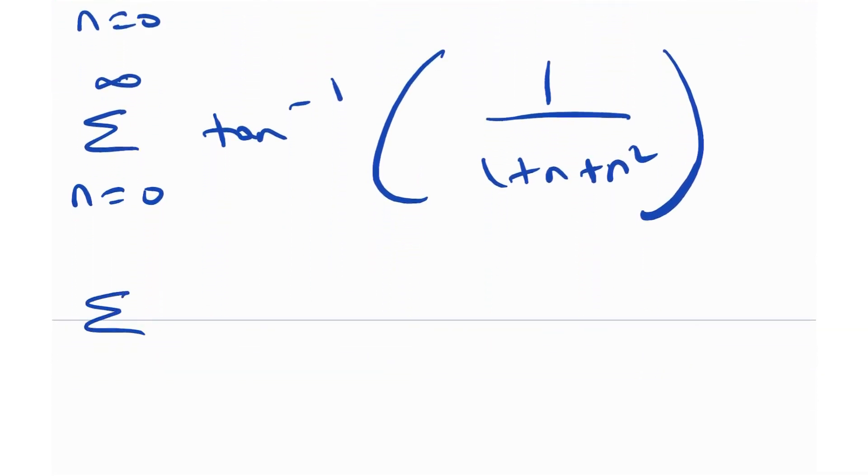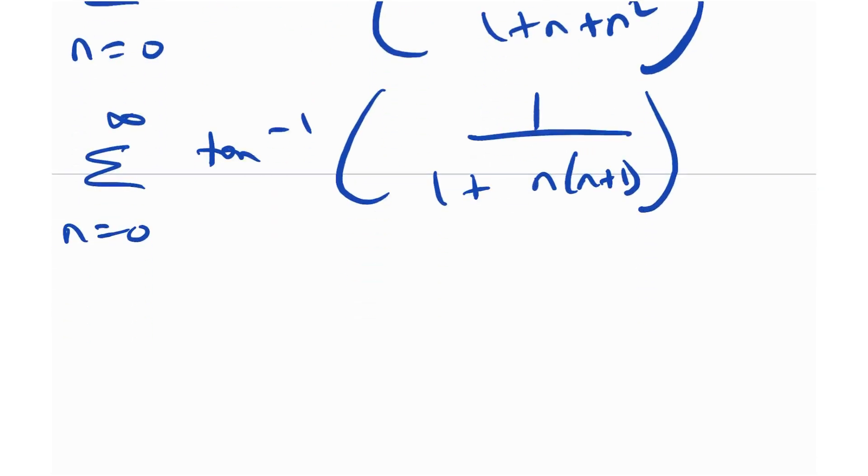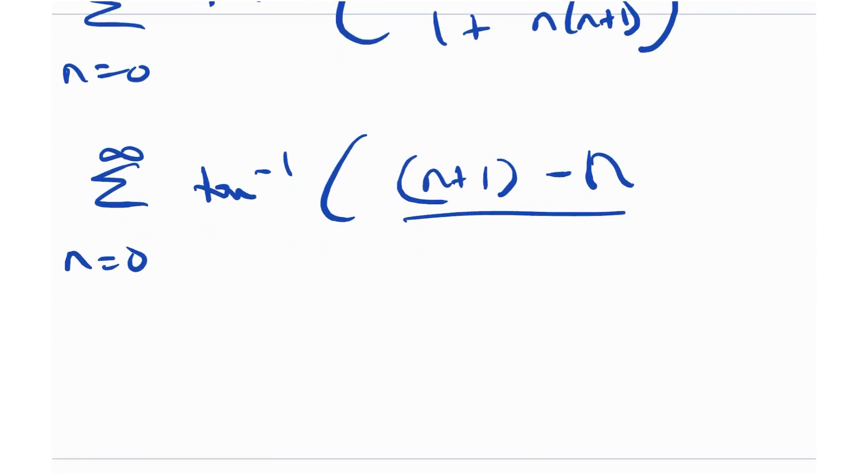And how can we do that? We can do that by the simple manipulation or the simple observation that the denominator can be written as 1 plus n times n plus 1. And the numerator can indeed be written as n plus 1 minus n. And the denominator, we have 1 plus n times n plus 1. Like this.